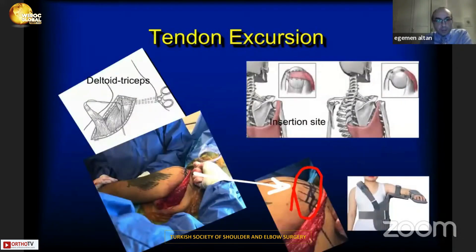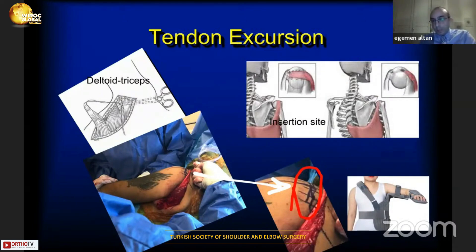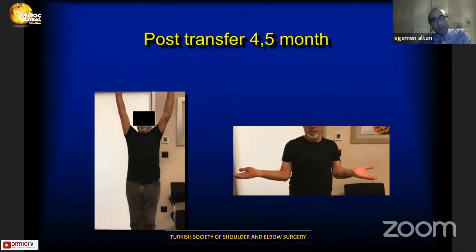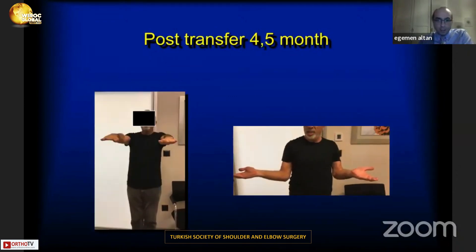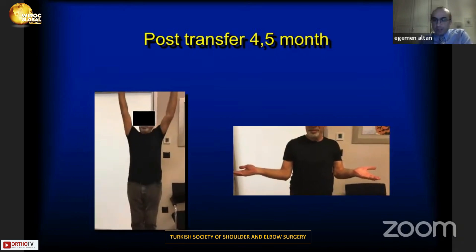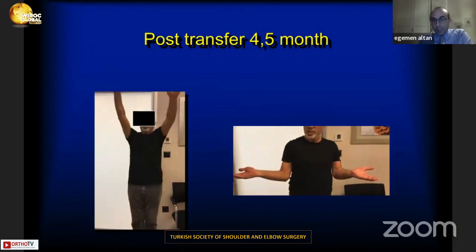Technical details include Krackow sutures with careful pedicle dissection ensuring no tension on the pedicle. Tendon excursion must pass between the deltoid and triceps muscles, with the insertion footprint positioned close to the subscapularis tendon. At four and a half months post-transfer, the patient demonstrates full supple range of motion with full abduction and no external lag sign.